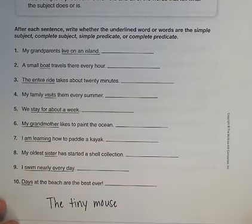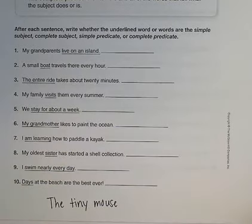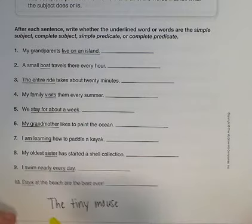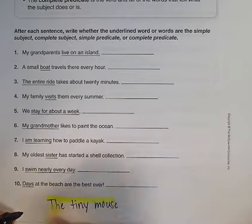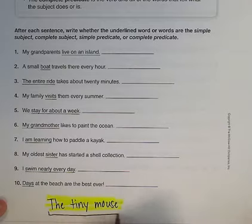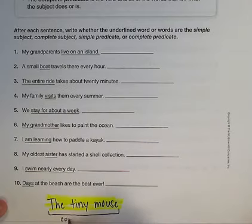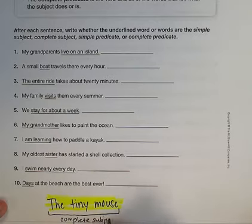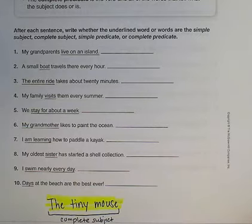I'm going to start with a subject. I have a tiny mouse. All the words that I wrote so far are going to tell you about the subject of the sentence. My sentence is going to be about a tiny mouse. All the words that make up my subject are the complete subject. When you find out more about the tiny mouse, like what he does, that's part of the predicate of the sentence. So I'm going to write a predicate now.